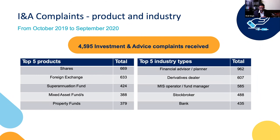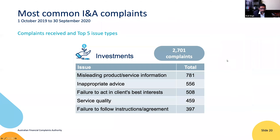In terms of investments and advice complaints — that 6% I talked about, roughly 4,500 — the top five products are: shares at 670, foreign exchange or FX trading at 633, super funds at 420, mixed assets at 388, and property at 379. In terms of industry types in this area, it's no surprise that 962 are against financial planners. Derivatives dealers are also a high number, and stockbrokers are 488.